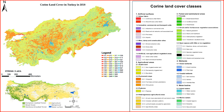2. Agricultural land. Agriculture has been a significant part of Turkey's economy for centuries. The country has fertile plains and valleys that support the cultivation of various crops. Major agricultural products include wheat, barley, cotton, fruits, and vegetables. Different regions specialize in specific types of agriculture based on climate and soil conditions.